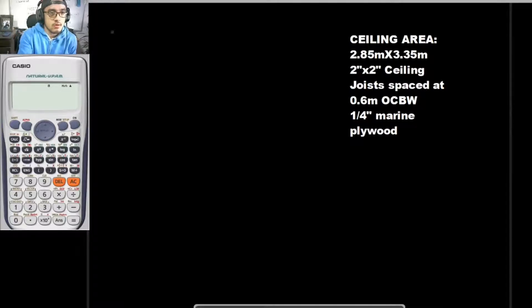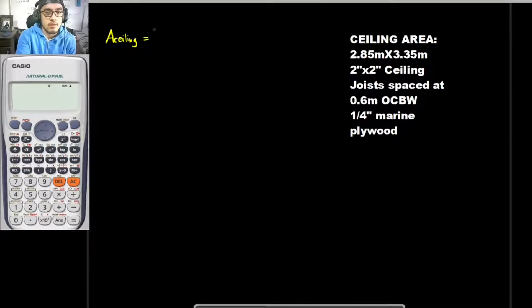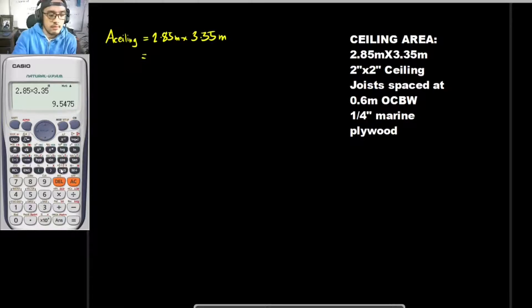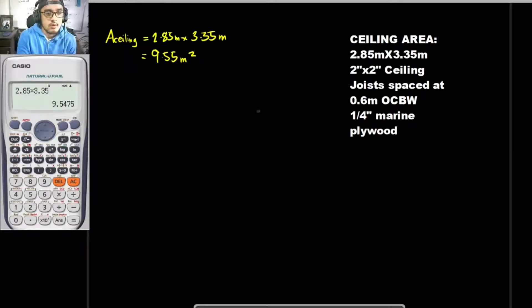For the area of the ceiling: it is stated that the ceiling area is 2.85 meters by 3.35 meters. So 2.85 times 3.35 gives us 9.55 square meters.